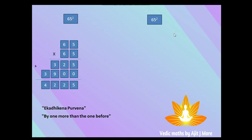Using the Vedic trick to find 65 squared: the answer will be made up of two parts. For the first part, take the digit before 5 — that is 6 — and multiply it with its next digit, which is 7. Six into seven gives 42, and 42 is the first part of your answer.